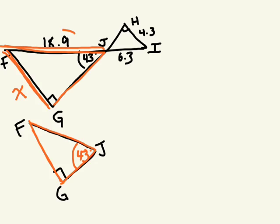No. Oh, wait, we do. We said FJ is 18.9. Good, so we'll label that because we know that this side length is 18.9.